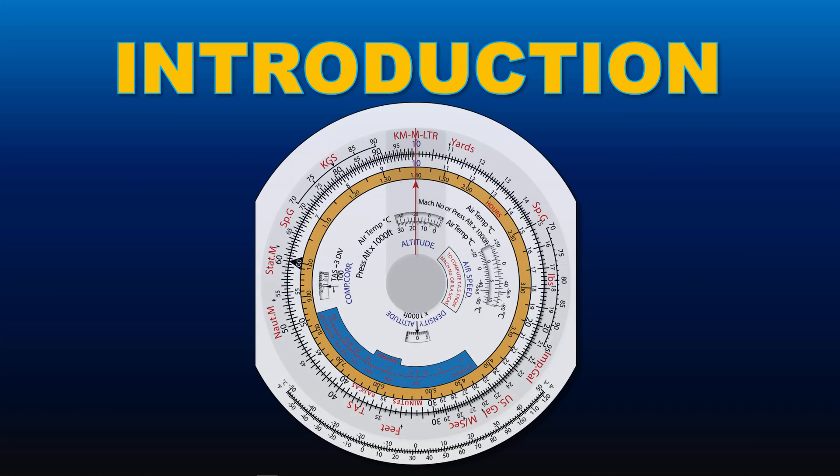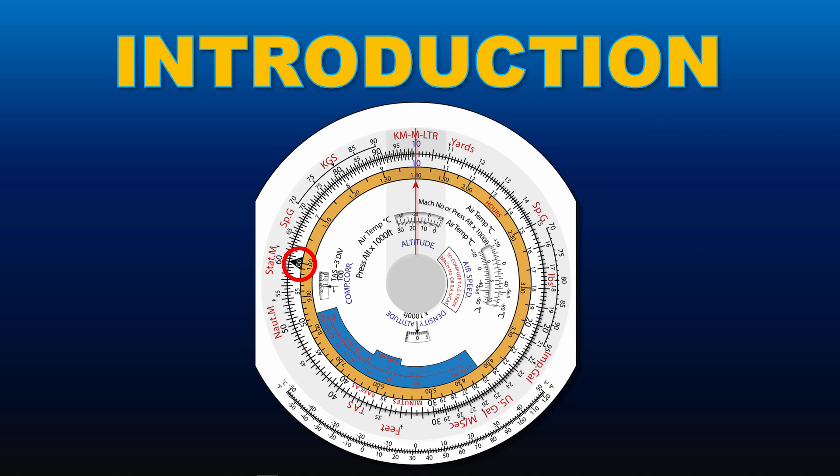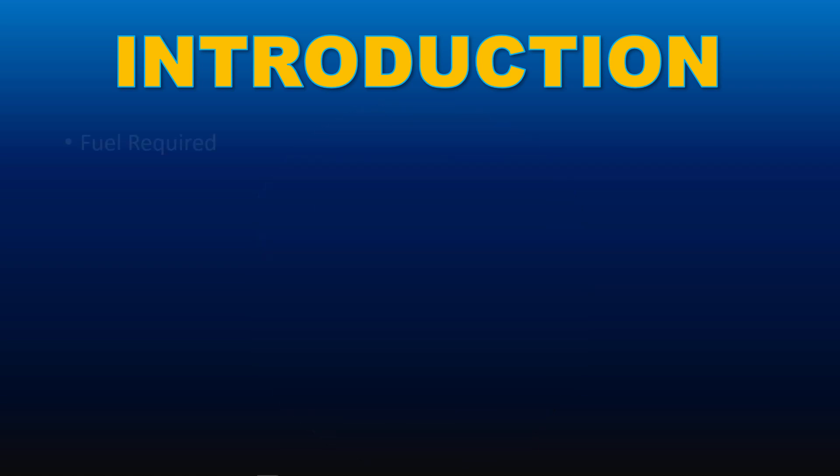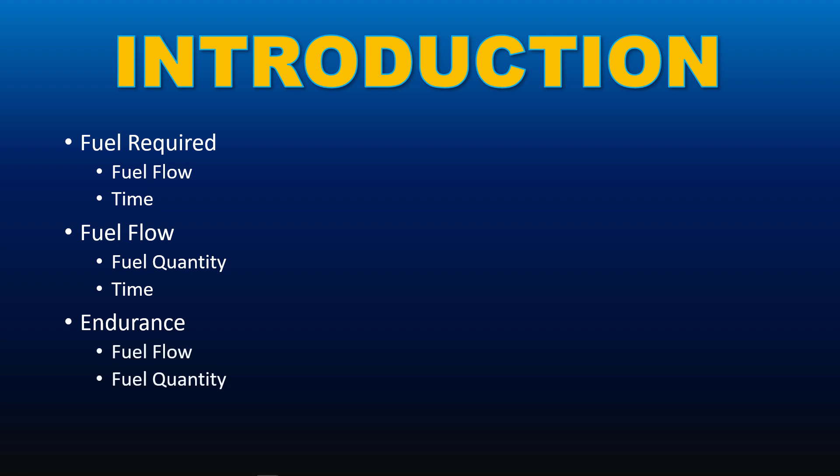The CRP5 navigation computer uses the 60 index throughout this lesson on fuel calculations. The lesson is divided into three parts and will instruct you in the method of finding fuel required when given fuel flow and time, finding fuel flow when given fuel quantity and time, and finding endurance when given fuel flow and fuel quantity.